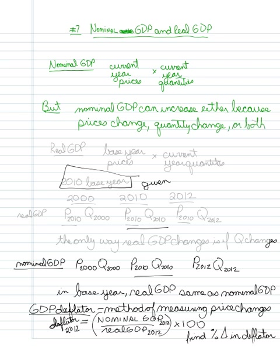And for an economist, that's a little distressing, because when we're looking at GDP, we're generally concerned about whether more is actually being produced — not just that the same amount is being produced but at higher prices. So instead, what economists tend to focus on is a measure known as real GDP, which keeps prices fixed at what we call the base year prices, and multiplies them by current year quantities.